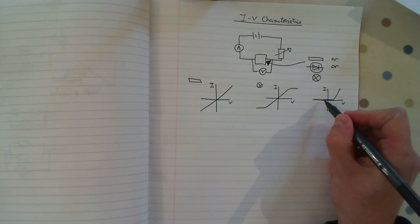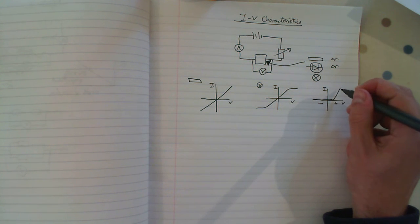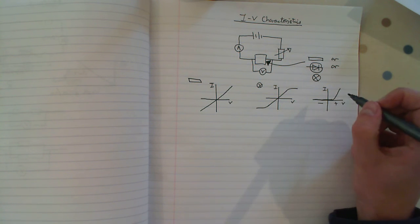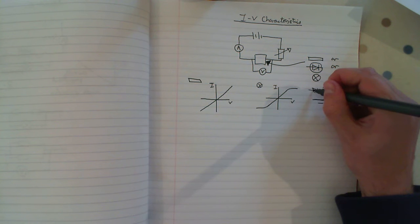For the diode, no current in the negative direction because the resistance is very high. In the positive direction, current's very high with very low resistance. That's why diodes point in one direction, showing the direction that they work in.